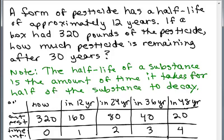So if the problem asked, if a box had 320 pounds of pesticide, how much pesticide is remaining after 24 years, it'd be easy. We could look in this chart and see after 24 years, we've got 80 pounds of pesticide. Or if it asked after 36 years, you could say there's 40 pounds of pesticide. Now 30 years is right in between here, and so some people think it could be just the average of 80 and 40, but that's not really the case.